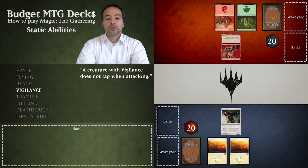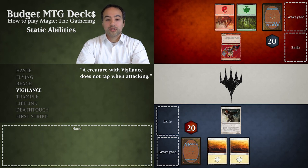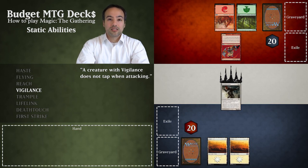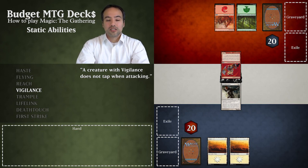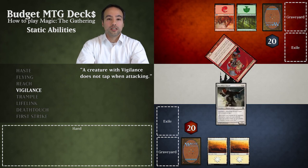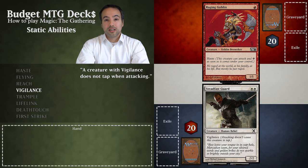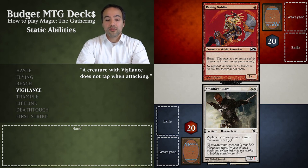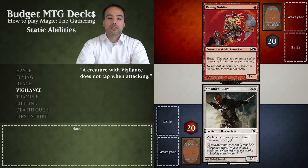We already had Steadfast Guard since the beginning of our turn and our opponent has a Raging Goblin. In our combat phase we declare Steadfast Guard to attack — notice how we do not tap it. Our opponent declares the Raging Goblin to block the Steadfast Guard. Damage is resolved simultaneously: the goblin does one point of damage to the Steadfast Guard and the Steadfast Guard does two points of damage to the Raging Goblin. Notice that even though the goblin only has one toughness, the Steadfast Guard must still deal its full two points of damage to the goblin even though one would have been enough.